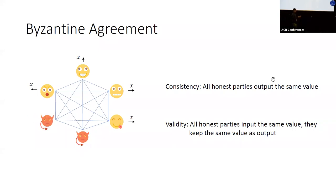And the second guarantee is that if all honest parties input the same value x, then this is the value they should jointly output. Of course, these two guarantees need to hold even when a subset of parties are corrupted. Achieving each guarantee independently is easy, but achieving both at the same time is not trivial.